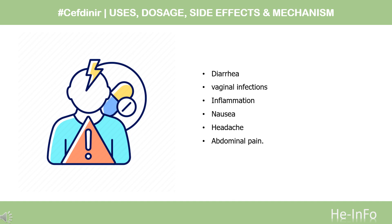Side effects include diarrhea, vaginal infections or inflammation, nausea, headache, and abdominal pain. It is also one of the medications that can cause toxic epidermal necrolysis or Stevens-Johnson syndrome. The pediatric version of cefdinir can bind to iron in the digestive tract. In rare cases, this causes a rust or red discoloration of the stool.